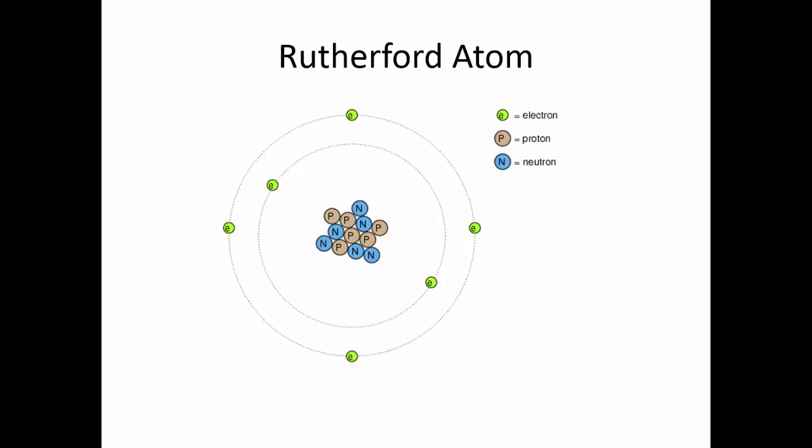Here is a model of an atom that I'm sure we are all familiar with. This is the model where we have a nucleus with protons and neutrons, and surrounding that nucleus, circling around it, are some electrons. In this case we have 6 protons, 6 neutrons, and 6 electrons.